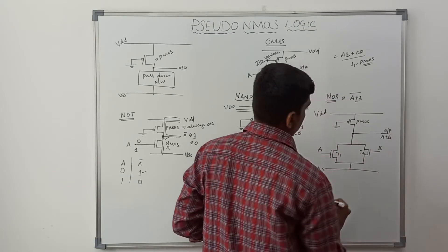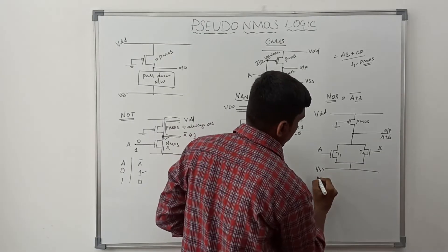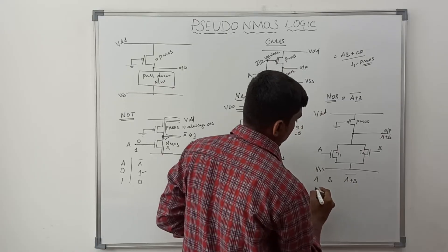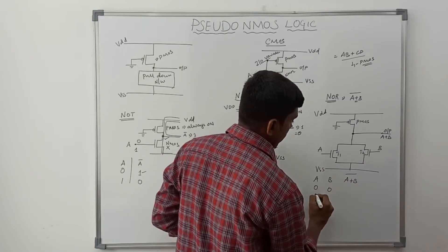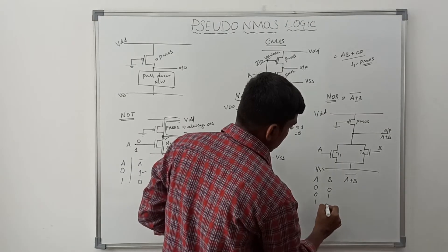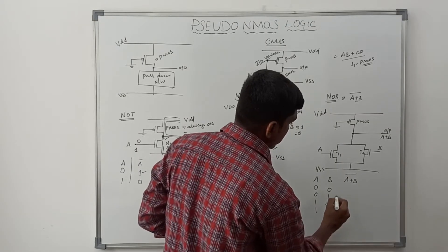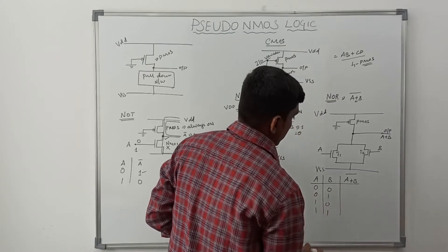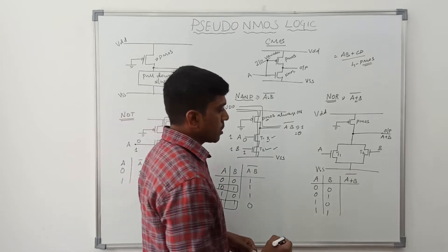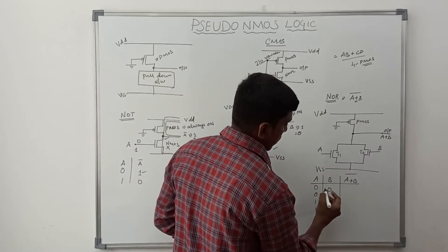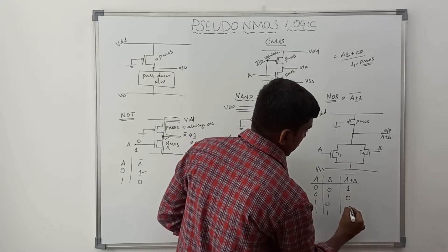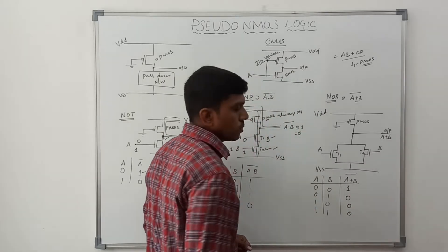VDD and VSS are marked. Now writing the truth table for this NOR gate with output A plus B, whole bar. The two variables give four input combinations: 0,0; 0,1; 1,0; 1,1. For NOR gate: 0 plus 0 equals 0, complement gives 1. All remaining output values are 0.